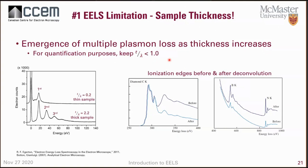If you have a spectrometer with dual EELS, I highly recommend acquiring the zero loss peak, or even without dual EELS, acquire the zero loss peak first. You can then ensure you've measured your sample thickness and know if the region of interest is suitable for EELS. Acquiring the zero loss peak is really fast — just a few seconds — and you can already see the thickness of your region of interest.